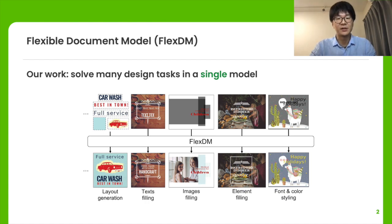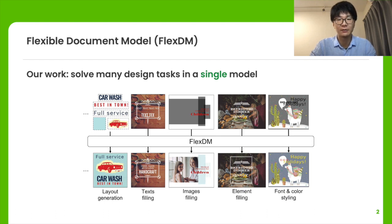Creative workflows for generating graphical documents involve complex and related tasks such as aligning elements, retrieving appropriate images, or choosing aesthetically harmonious colors. In this work, we attempt at building a holistic model that can jointly solve many different design tasks. To do so, we propose FlexDM, which is short for Flexible Document Model.